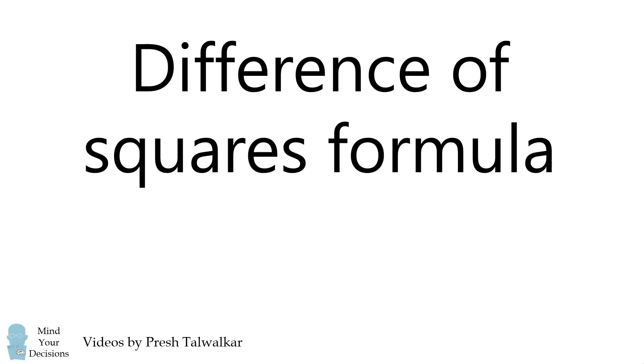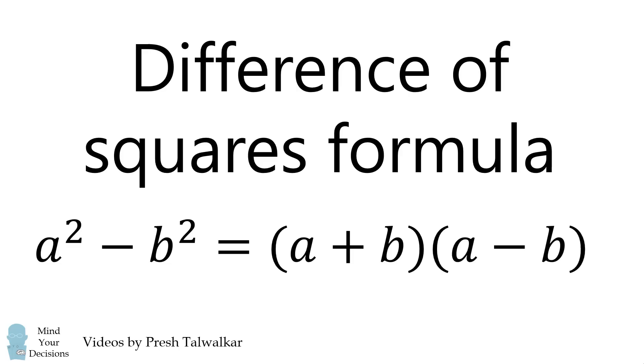To solve this problem, it helps to know the difference of squares formula. This states that a squared minus b squared is equal to the product of a plus b and a minus b. But if you didn't know this formula, how would you derive it? Let's go through a geometric explanation.